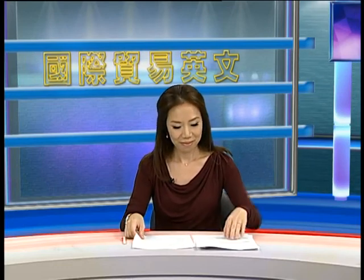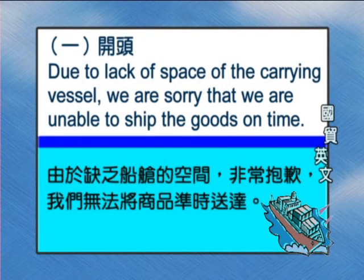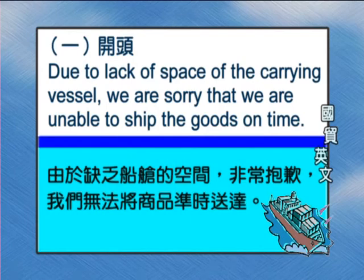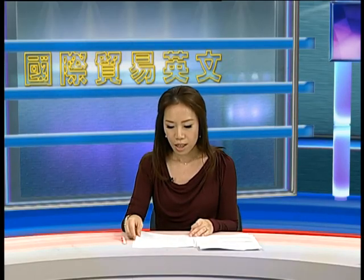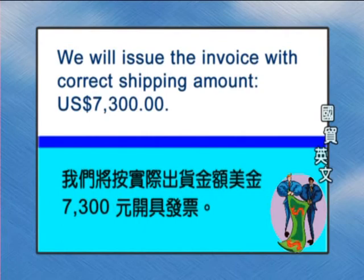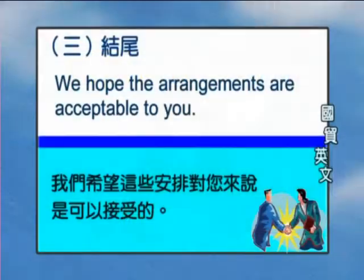We are sorry again for this delay. 在开头的部分我们可以说：Due to lack of space of the carrying vessel, we are sorry that we are unable to ship the goods on time——由于缺乏全舱的空间，非常抱歉，我们无法将商品准时送达。那内文的地方呢，我们可以说：We will issue the invoice with correct shipping amount of $7,300 US dollar——我们将以实际出货的金额美金7,300元开具发票。最后在结尾的部分呢，我们可以说：We hope the arrangements are acceptable to you——我们希望这些安排对您来说是可以接受的。